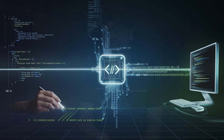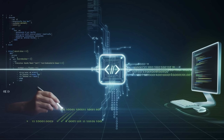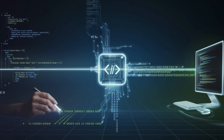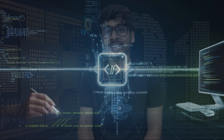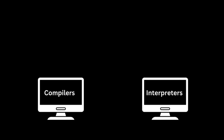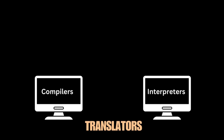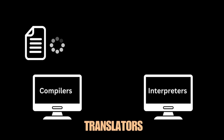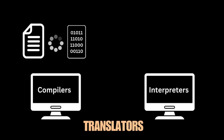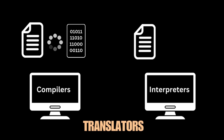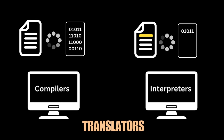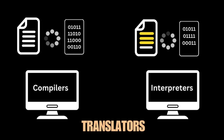Computers only understand binary ones and zeros. They don't exactly understand the code we write, so we need a translator in between who can translate what we write into binary. Compilers and interpreters are these translators, but they work differently. A compiler translates the whole code into machine code — binary — which runs on your machine directly, while an interpreter translates the code line by line during runtime.